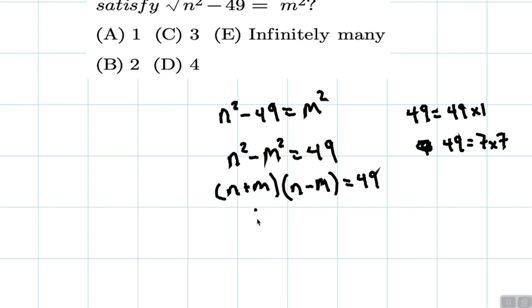So here, what's going to make each of these equal to 7? Well, if we have 7 plus 0 and 7 minus 0, that'll give us 49. So n here is equal to 7 and m is equal to 0.